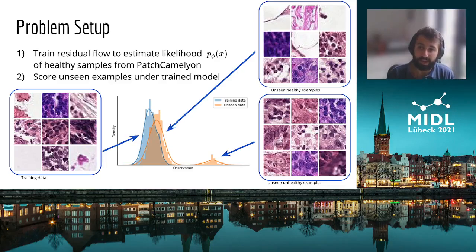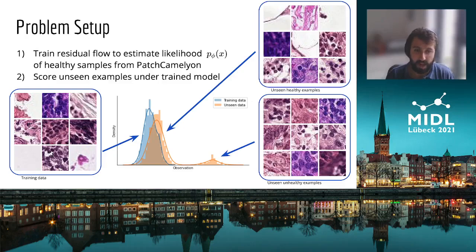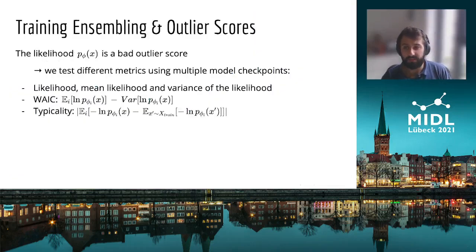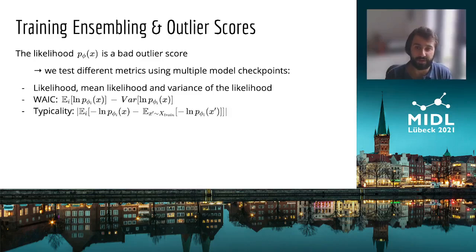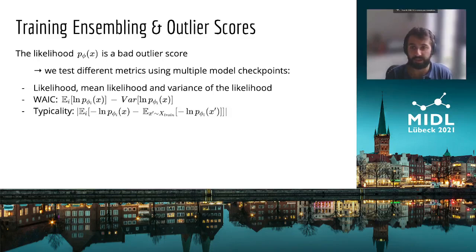The diagram in the middle gives an intuitive visualization, but does not show real data. However, in practice, we find that using the likelihood is a bad score for differentiating healthy and unhealthy samples. This is in line with various previous papers on outlier or out-of-distribution detection using generative models.